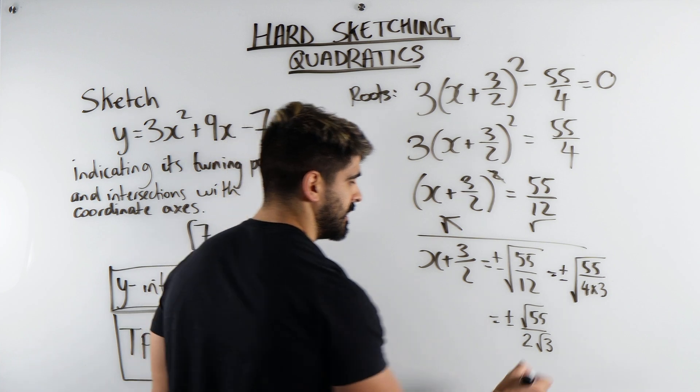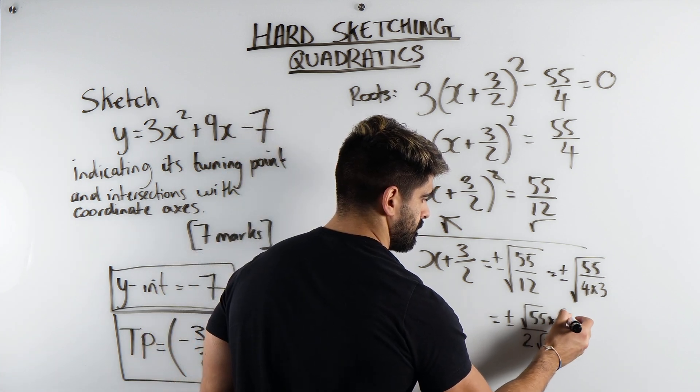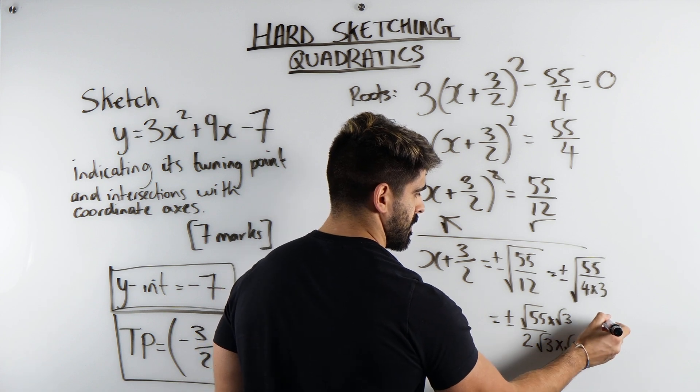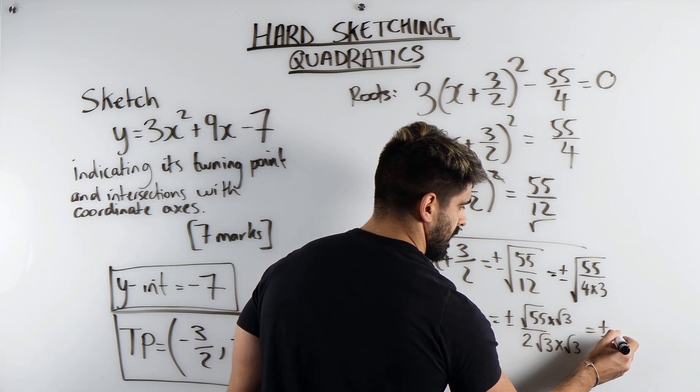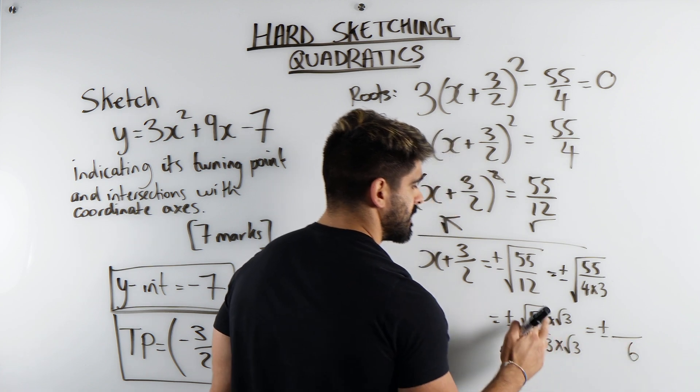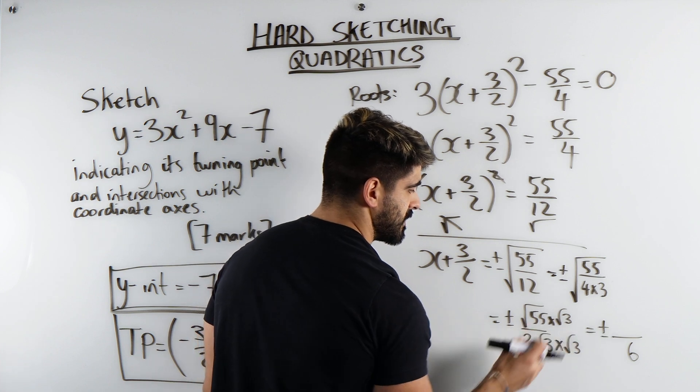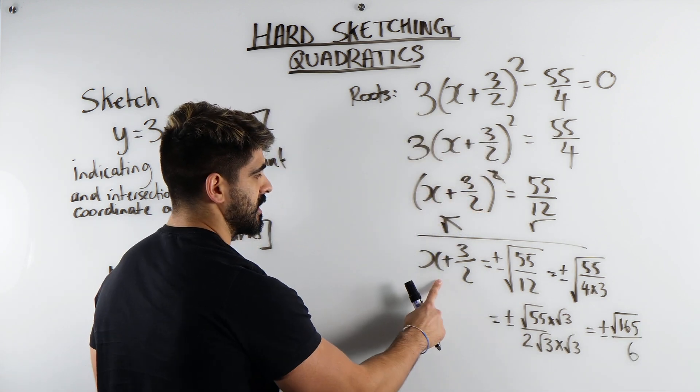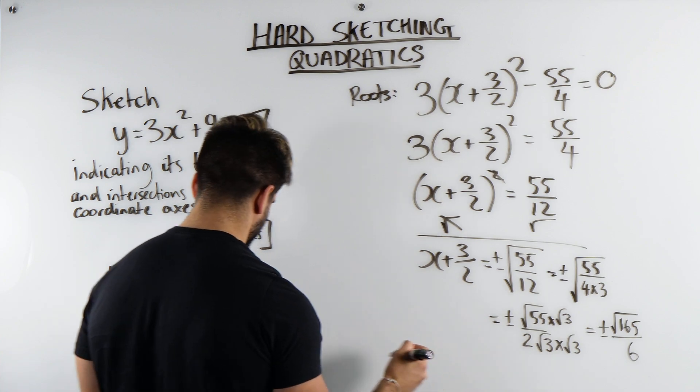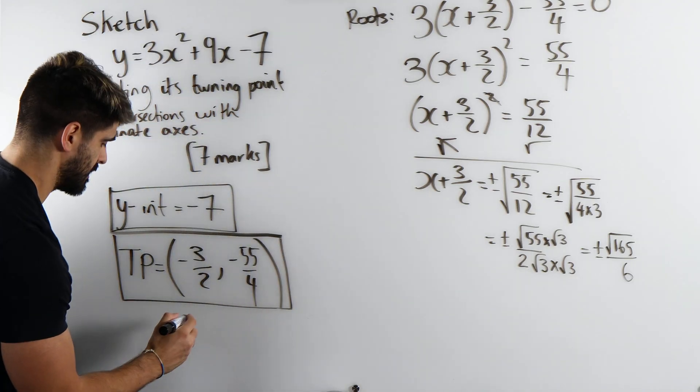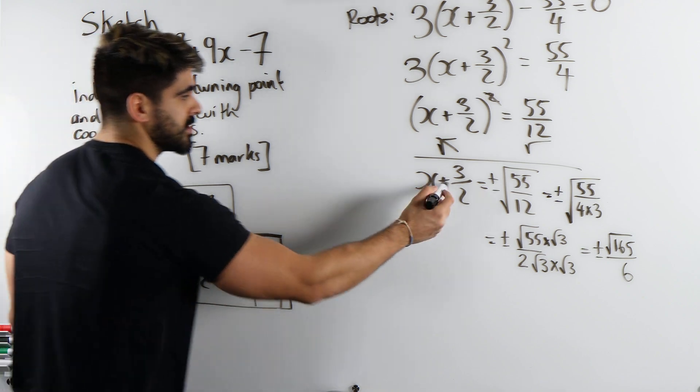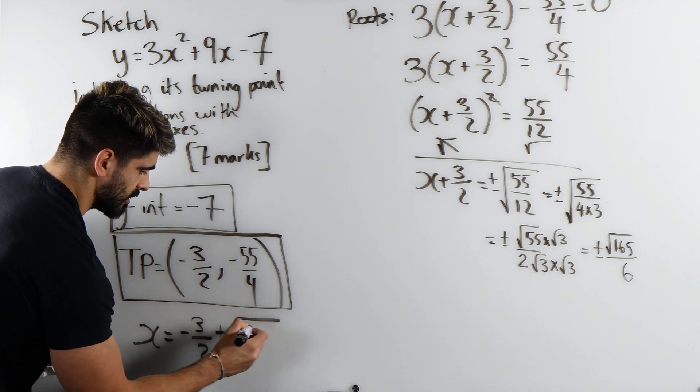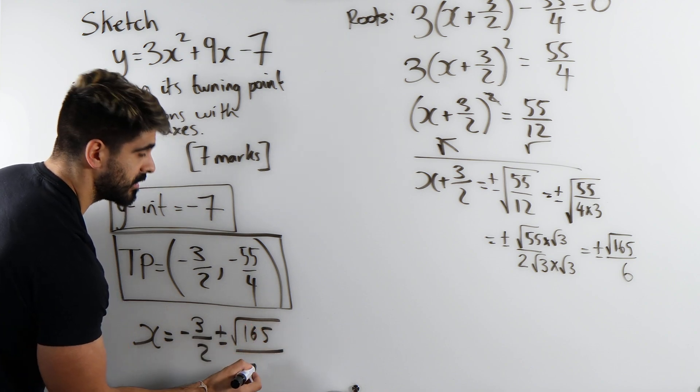So we get plus or minus. In the denominator, we have 6. Then here we have √55 times √3. We do 55 times 3, which is 165. That was equal to this. Then we're going to move the 3/2. I'm going to write over here. So x is the positive on the other side will be negative. So it'll be -3/2 ± √165/6.